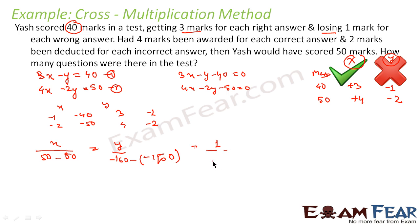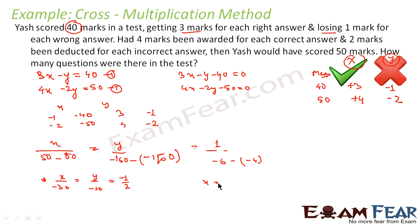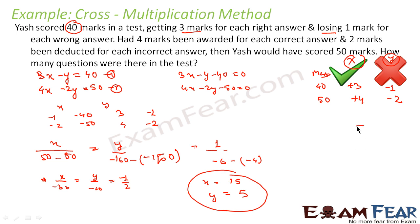Applying cross multiplication with coefficients: 3 and 4 for x; minus 1 and minus 2 for y; minus 40 and minus 50 as constants. Solving, x equals 30 divided by 2 — wait, x becomes 15 correct answers and y equals 5 incorrect answers. So Yash had 15 correct and 5 incorrect answers.